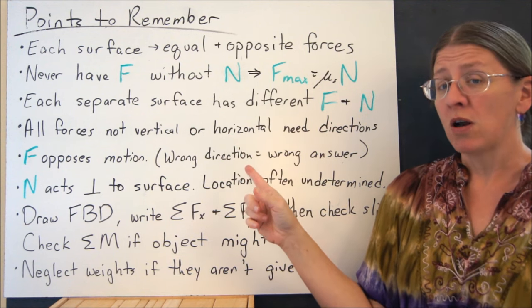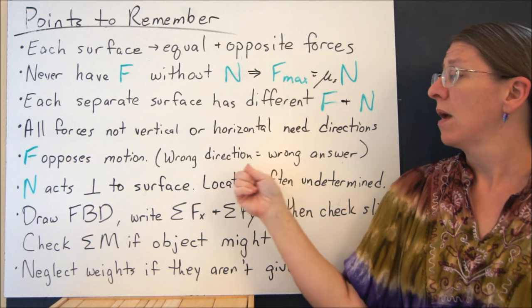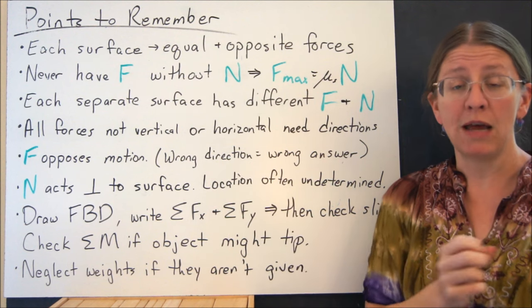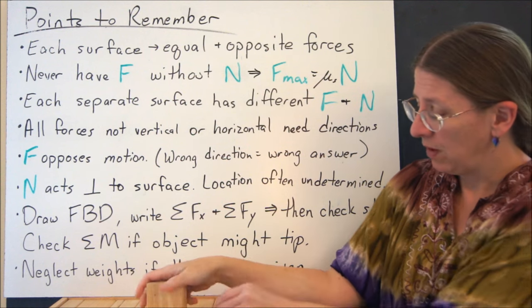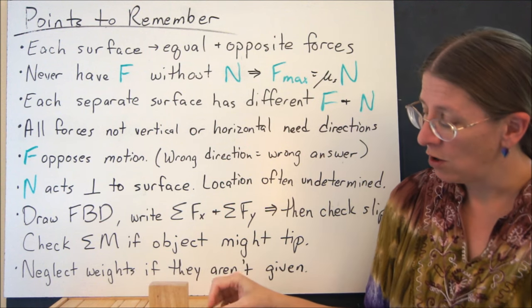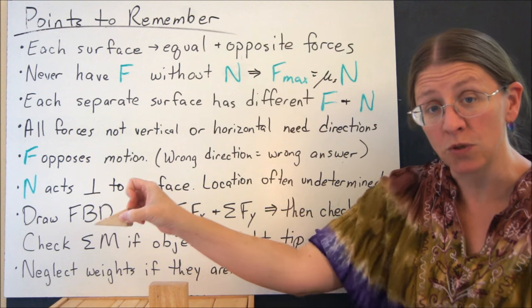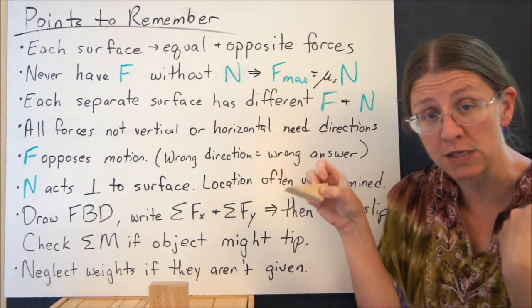Any force that isn't vertical or horizontal has to have a direction. For friction, bear in mind that F is always going to oppose motion. So you ask yourself, with what I have assumed here, which way is this going to move? Friction opposes that motion.